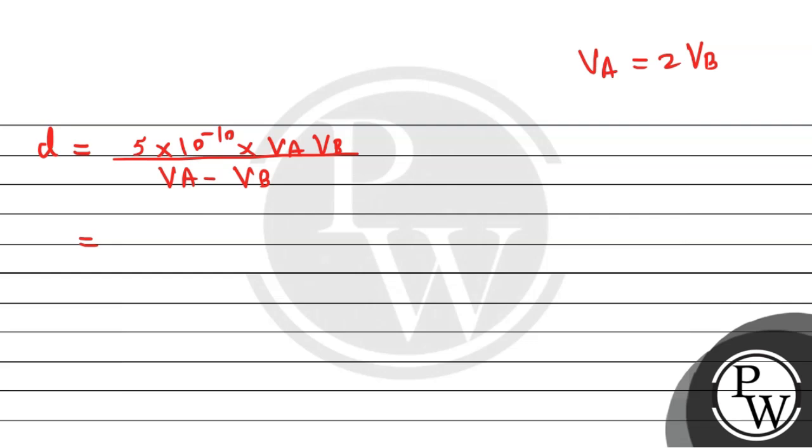We'll substitute this here. This becomes 5 into 10 to the power minus 10 multiplied by 2 times VB times VB. In the denominator, VA is 2VB, so 1 VB remains. VB cancels out.